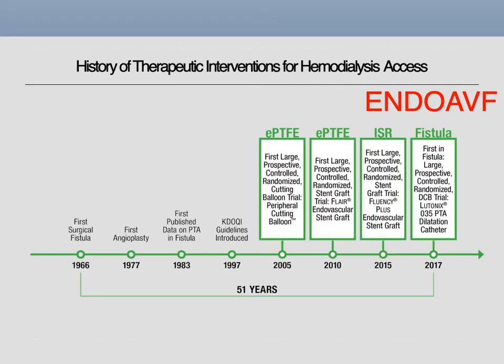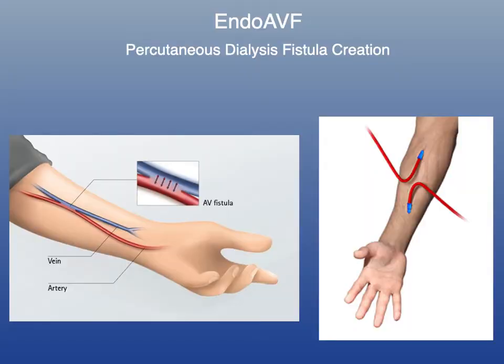When you look at the history of dialysis interventions, the first surgical fistula was created in 1966. And it wasn't until 51 years later that something really groundbreaking occurred — the endo AVF, or percutaneous dialysis fistula creation, as it's known.